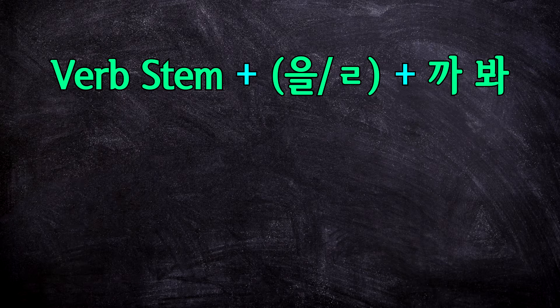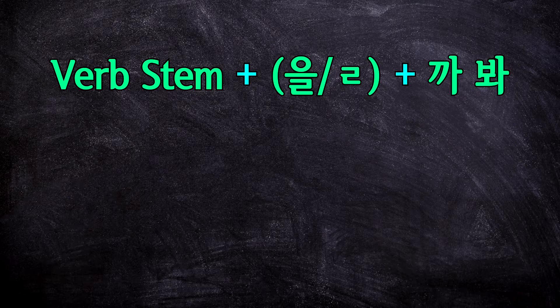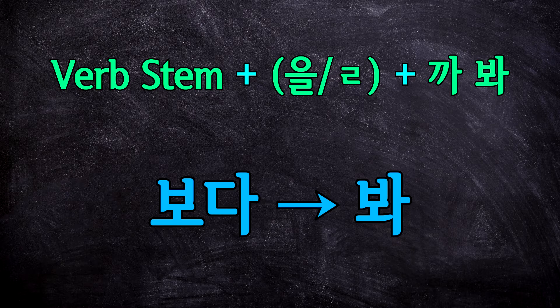Here is the form that we'll be using. Take a verb stem and attach 을까 if it ends in a consonant, or just attach ㄹ까 if it ends in a vowel. Then attach 봐. This 바 actually just comes from the verb 보다, meaning to see or to look.